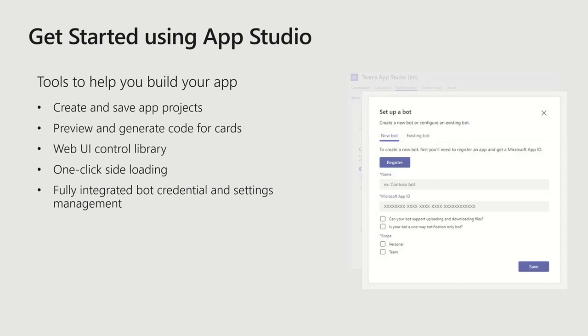To get started, we provide a tool called App Studio, which is an app that helps you create, register, and manage your project. It provides features like the ability to create and save your app projects, preview and generate cards to see how your bot or messaging extension will deliver cards for your end user, and a control library so that if you want to create a tab or web interface consistent with Teams, you don't have to create your own CSS. We also provide really easy sideloading and testing — one-click functionality inside of App Studio. Recently, we also made it much easier to manage your bot credentials and endpoint settings directly within App Studio.